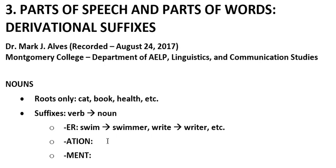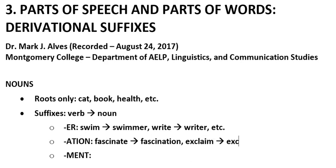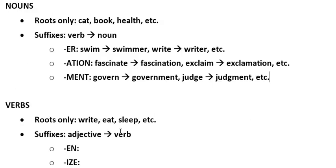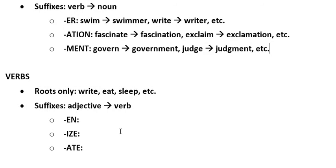-ation is another one of these. Let's consider fascinate and fascination, or exclaim and exclamation. -ment (M-E-N-T) is another type: govern to government, and judge to judgment. So -er is very flexible, while the other two are not as flexible — they can't be used on as many word forms.